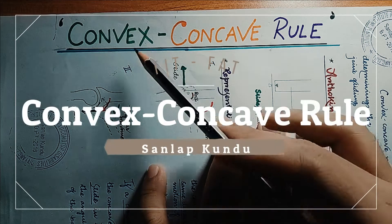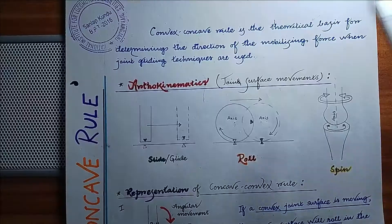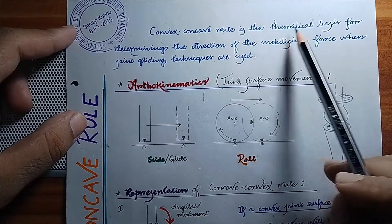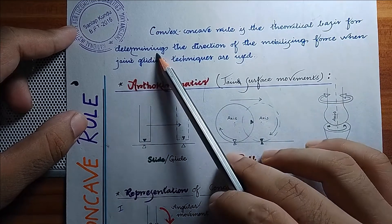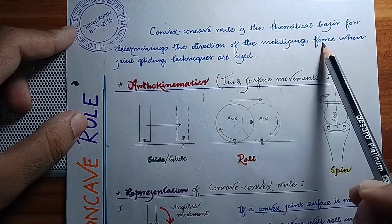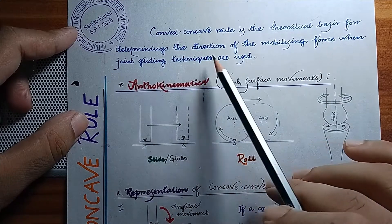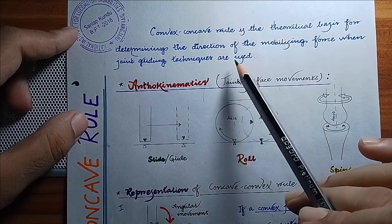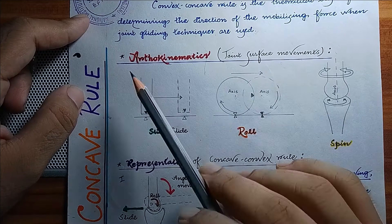In today's video, we are going to discuss the convex-concave rule. The convex-concave rule is the theoretical basis for determining the direction of mobilizing force when joint gliding techniques or mobilization are used. Before getting into the convex-concave rule, we first need to know the orthokinematics or joint surface movement.